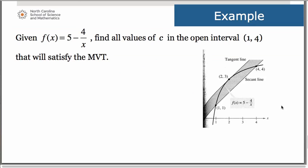Let's take a look at an example problem. Suppose we have the function f of x equals 5 minus 4 over x and you'll see the graph of it there to the right. We are asked to find all values of c in the open interval from 1 to 4 that will satisfy the mean value theorem.